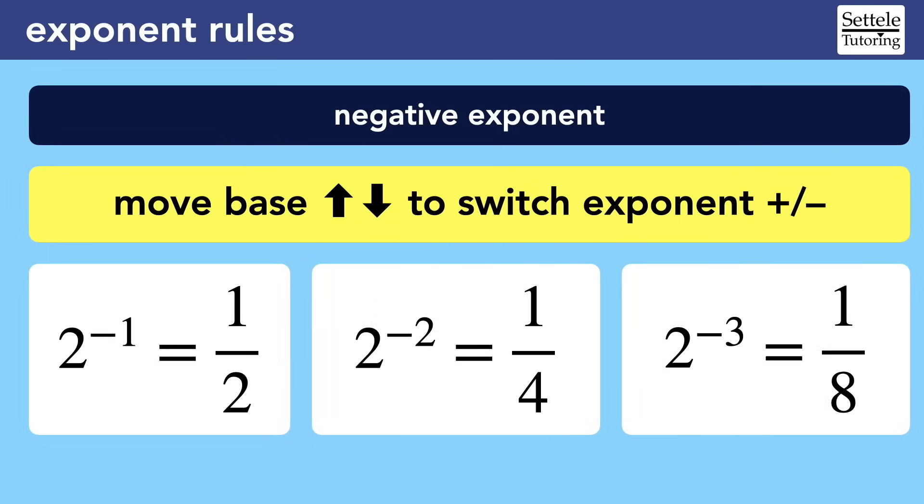We might also see the negative exponent rule used on ordinary numbers that we're supposed to interpret as fractions. Notice the pattern here. 2 to the negative 1 becomes 1 over 2, because we move the base from top to bottom and switch the negative 1 exponent to an unwritten positive 1. 2 to the negative 2 would become 1 over 2 squared, which simplifies to 1 fourth. And 2 to the negative 3 becomes 1 over 2 cubed, which is 1 eighth. You should be comfortable with the relationship between negative exponents and fractions.